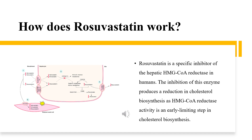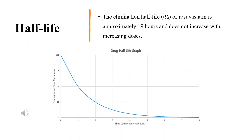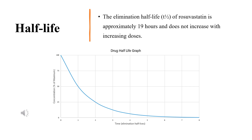How does rosuvastatin work? Rosuvastatin is a specific inhibitor of the hepatic HMG-CoA reductase in humans. Inhibition of this enzyme reduces cholesterol biosynthesis, as HMG-CoA reductase activity is an early limiting step in that pathway. This has been observed to increase the number of LDL receptors on cell surfaces and enhance receptor-mediated metabolism and clearance of LDL. Rosuvastatin-driven inhibition also inhibits hepatic synthesis of VLDL, as LDL is the precursor for these molecules. The elimination half-life (T½) of rosuvastatin is approximately 19 hours and does not increase with increasing doses.